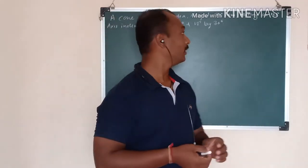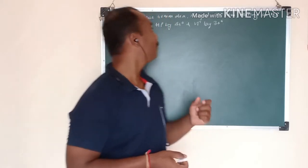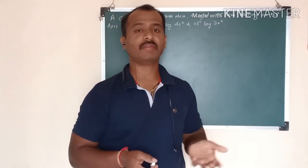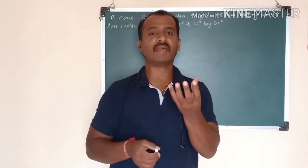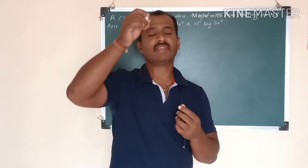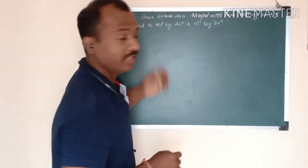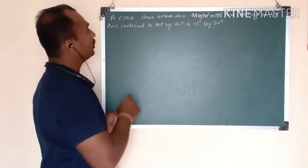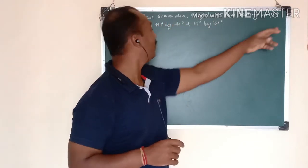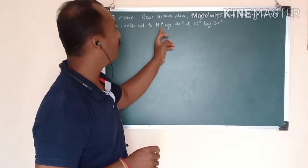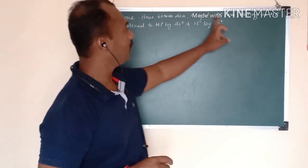Welcome back friends. In today's lecture we'll see one more type of solid, that is cone. We've already discussed in the types of plane video what a cone is — it has a circular base, an apex, all generators connected to the apex, and infinite number of generators. The problem given: a cone with base 60mm diameter, height 75mm, resting on HP, axis inclined to HP by 40 degrees and VP by 30 degrees.